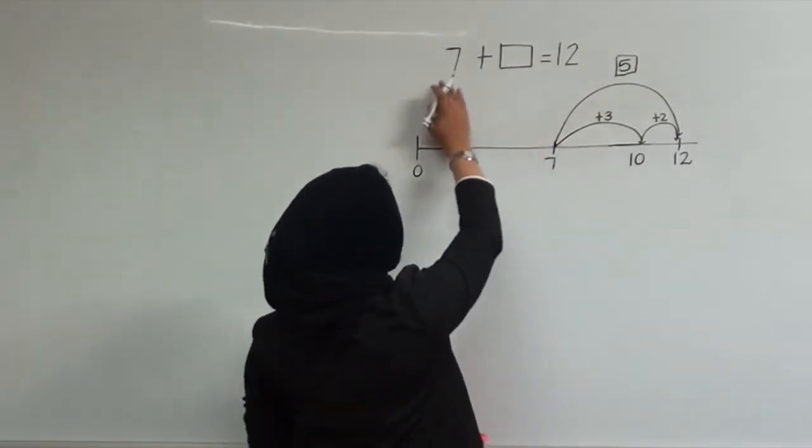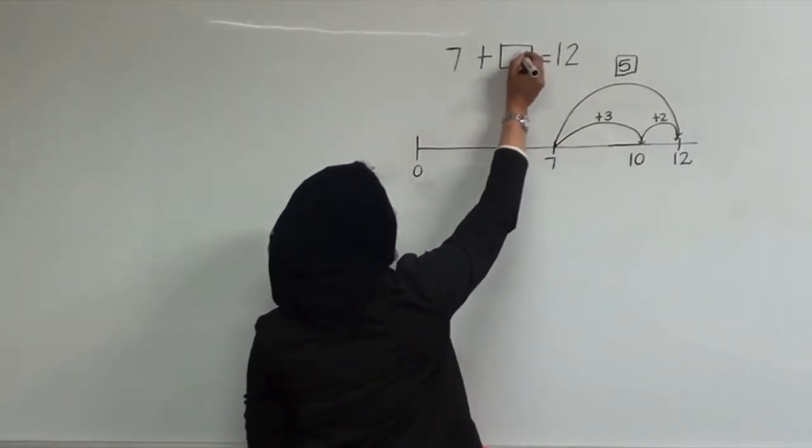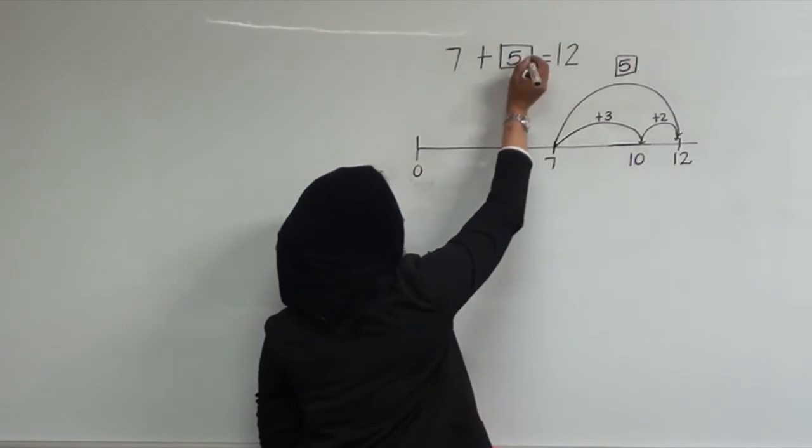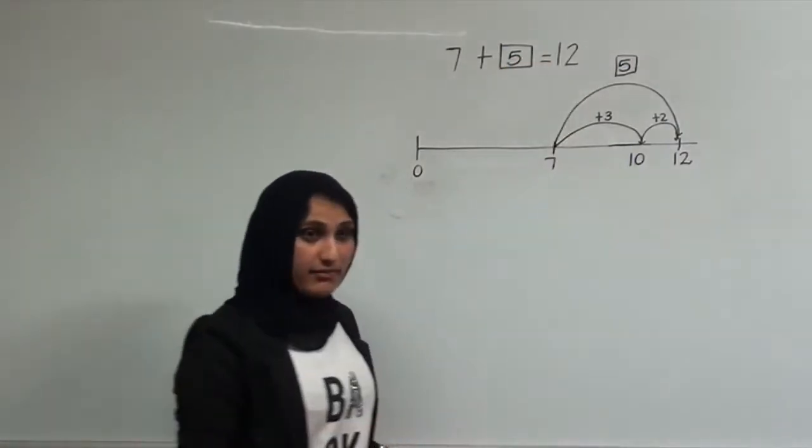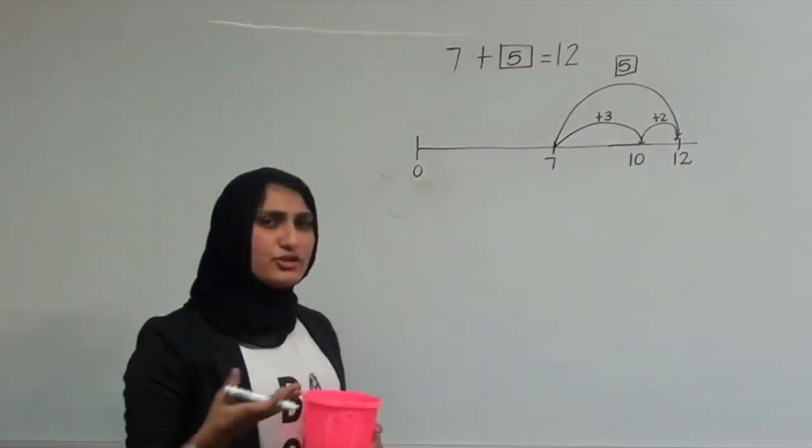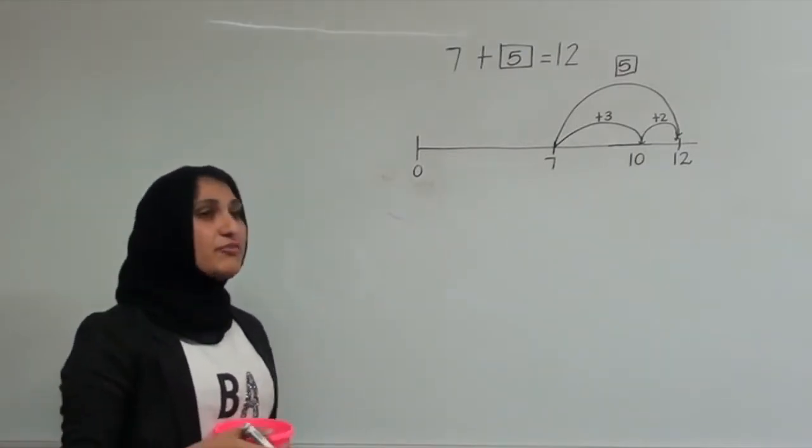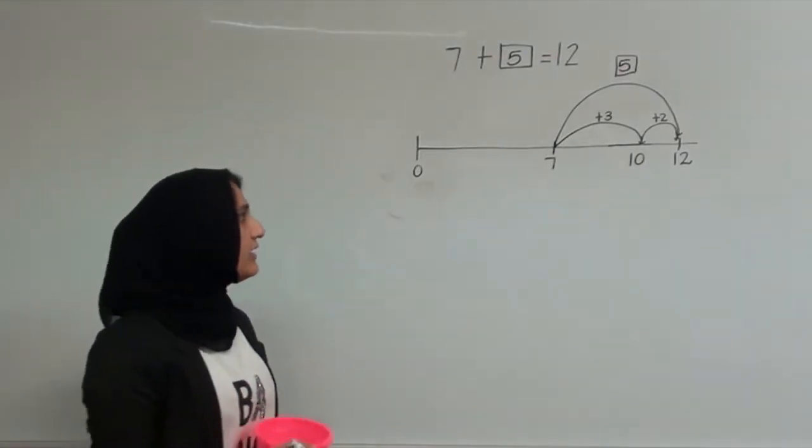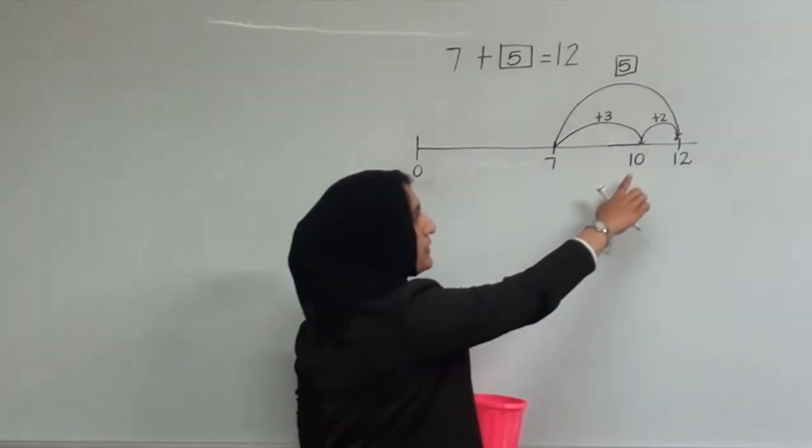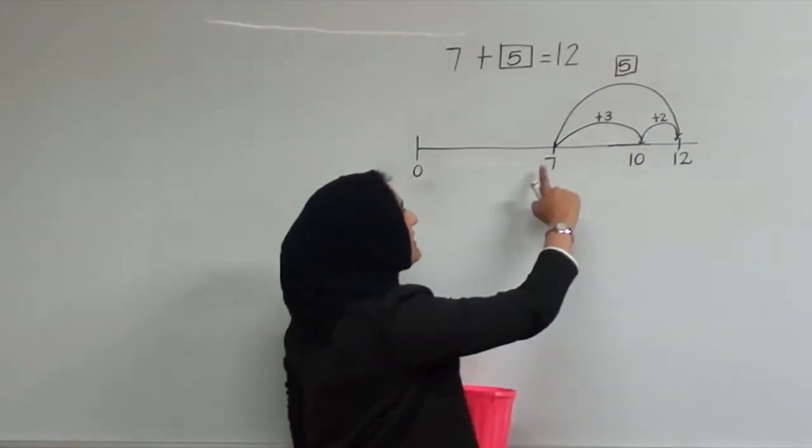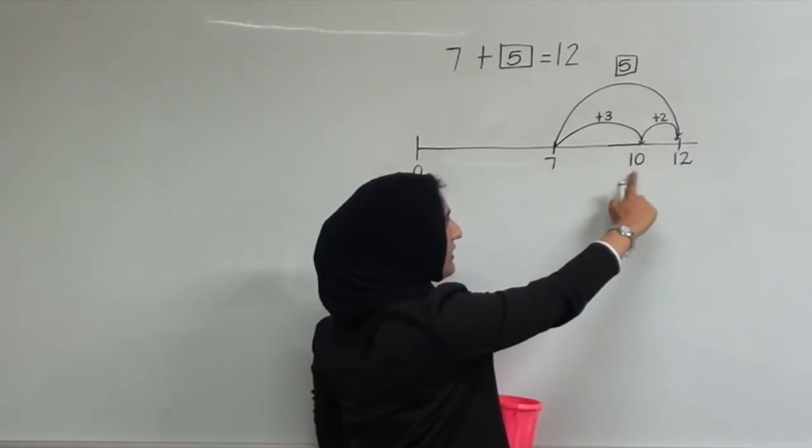Which means that 7 plus 5 equals 12. I want you to know how I get to 12. Instead of me counting on from 7, I've decided to jump through 10. So I said 7 plus 3 is 10.